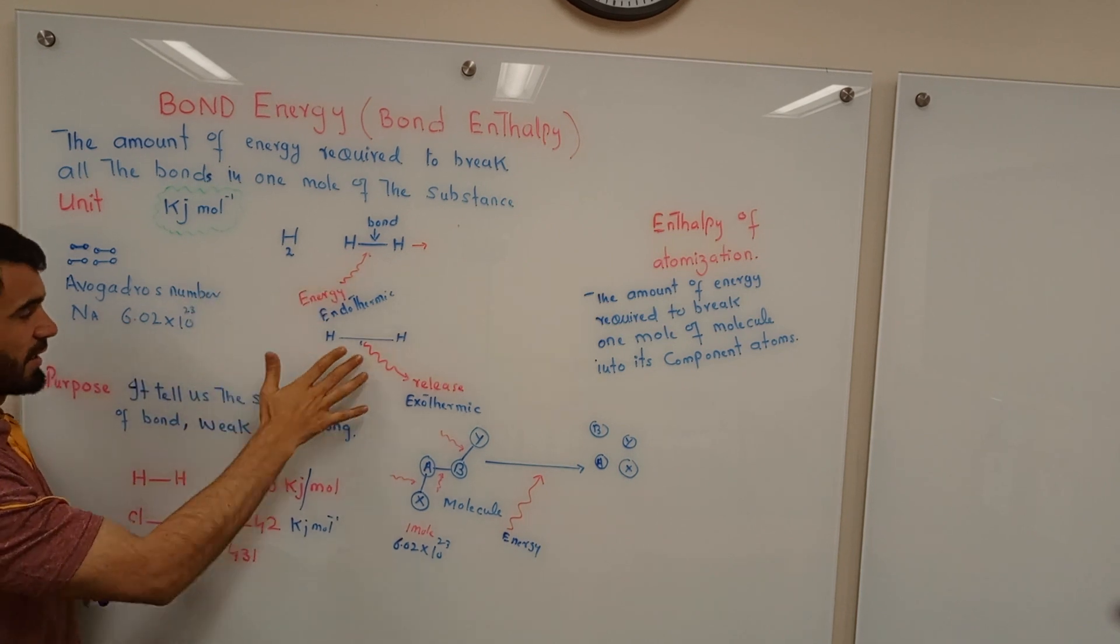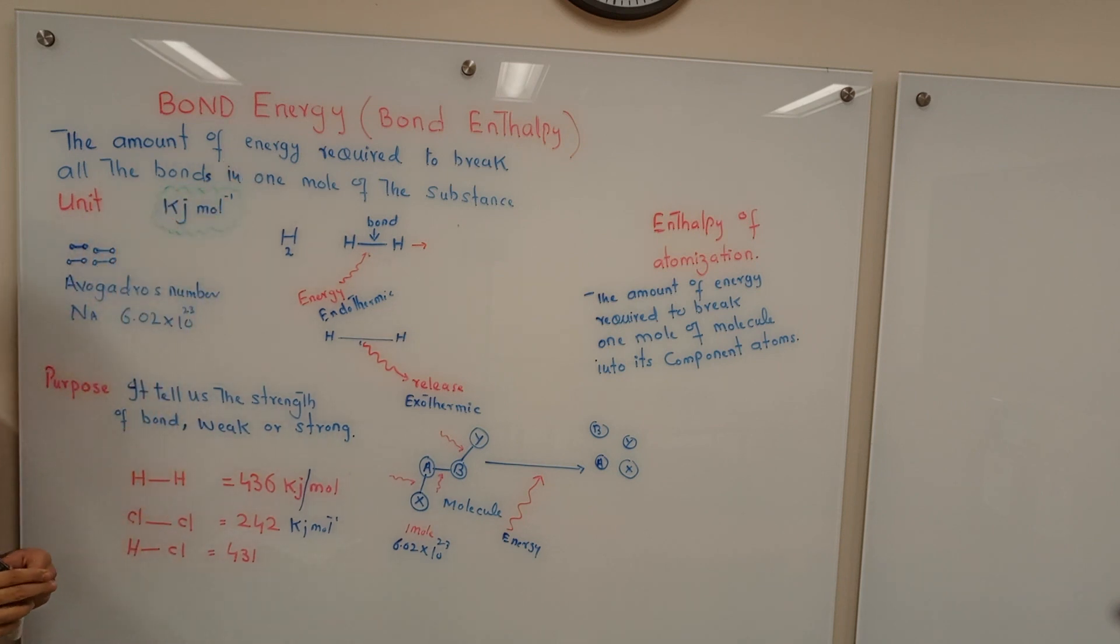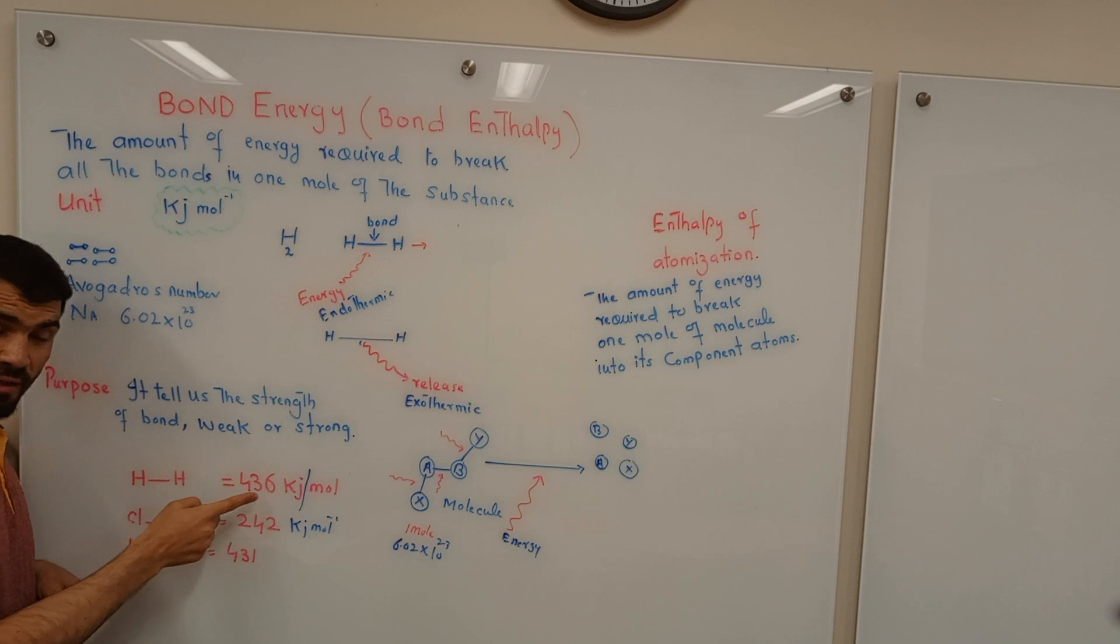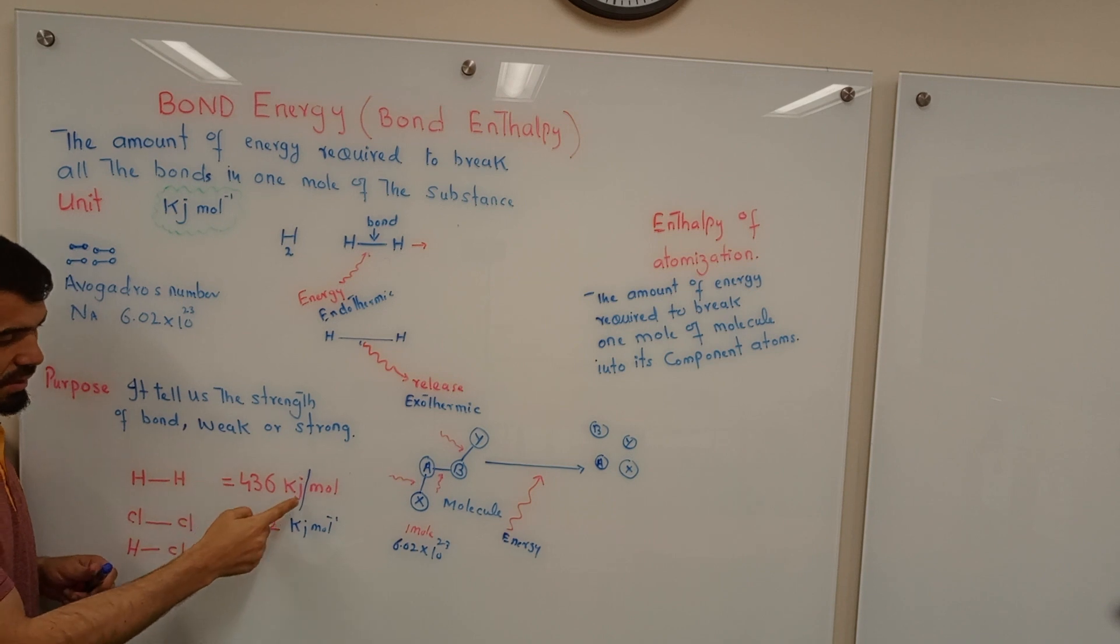If this is a substance, this number is one mole. So this is one mole of the substance. What is the unit for the bond energy? The unit for bond energy is kilojoule per mole. Whenever you have a molecule, for example this is a hydrogen molecule, and if you want to break this hydrogen molecule, so it will require 436 kilojoule per mole.